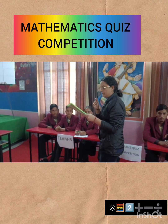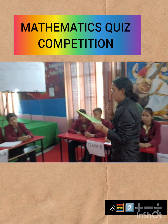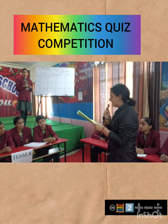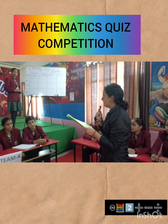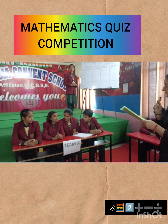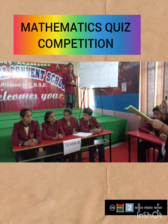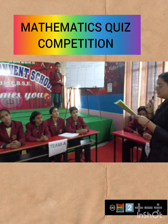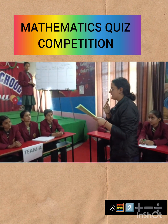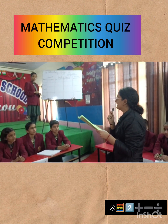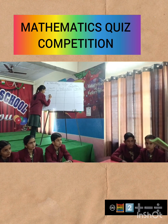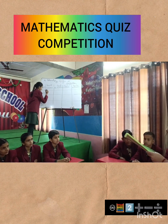First question for Team A: what is the surface area of a cylinder? The right answer is 2πr(r + h). Team A scored five marks.